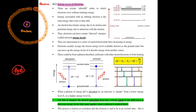For those electrons, there are actually certain allowed orbits in which the electrons can exist without emitting energy. The energy associated with an orbiting electron is the total energy that it has in orbit. When talking about the energy that an electron has, it would have kinetic energy due to its motion — your electron is orbiting around the nucleus, so it has motion, giving you KE here.